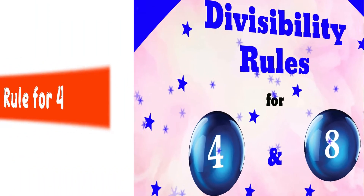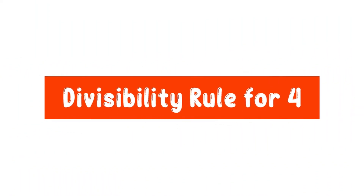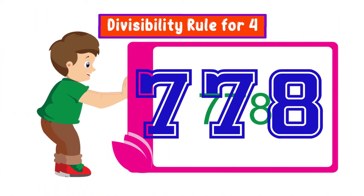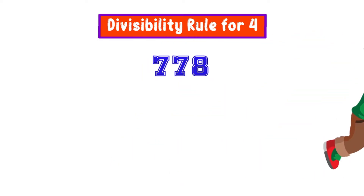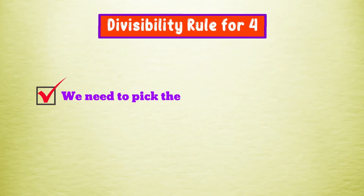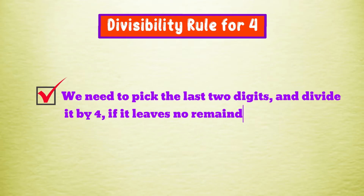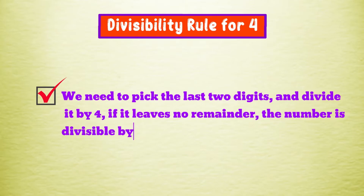First, we'll try the divisibility rule for 4 on the number 778. We need to pick the last two digits and divide it by 4. If it leaves no remainder, the number is divisible by 4.